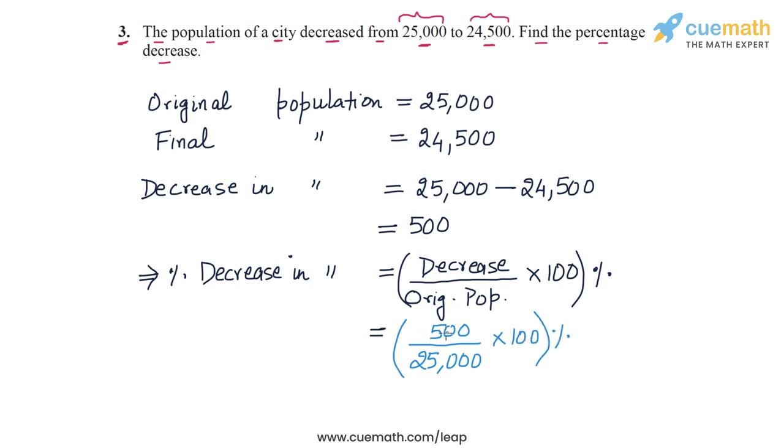Now we cancel out the two zeros here and here, and then we cancel out one zero here and here. And then 5 and 25, this leaves us with 5 in the denominator. Finally, we have 10 by 5 which is equal to 2, so we will get this as 2%.